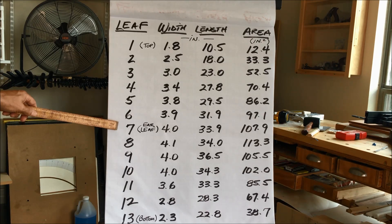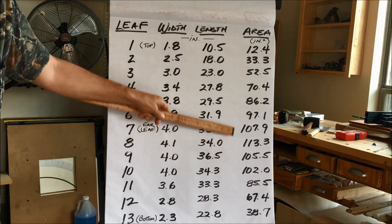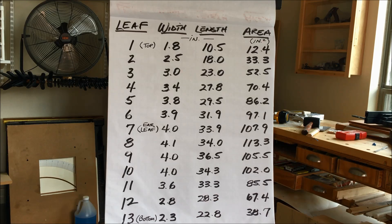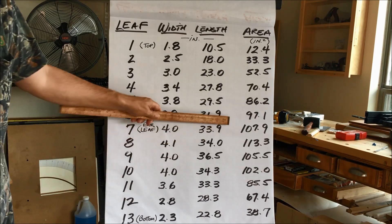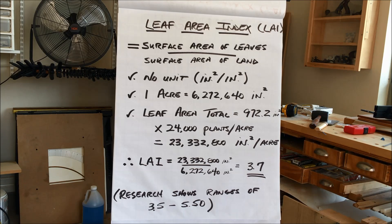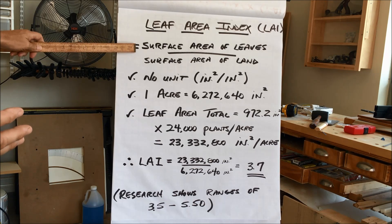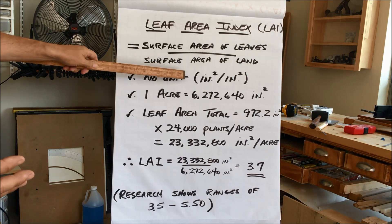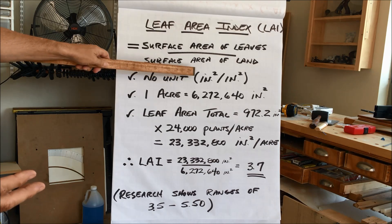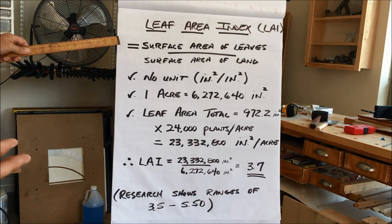The heart of the canopy — that ear leaf we so often talk about keeping healthy, keeping disease out of the heart of the canopy — this is why: half of your surface area is right there. That's the heart of the factory doing most of the work, capturing most of the sunlight. The leaf area index is a measure that reflects the surface area of the leaves relative to the surface area of land it's occupying. By definition, it has no unit — square inches of leaf area on a per-acre basis means the units cancel each other out.